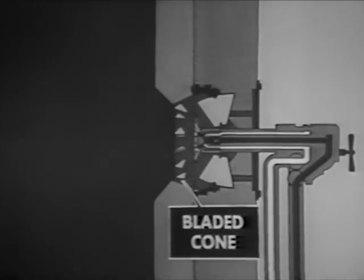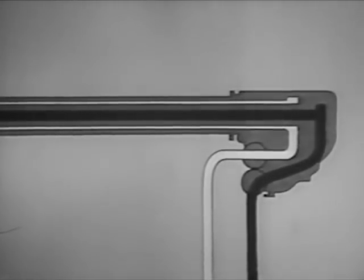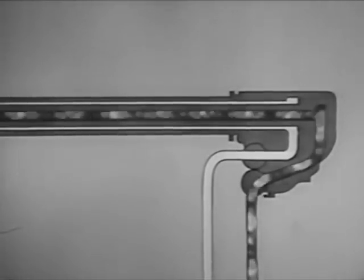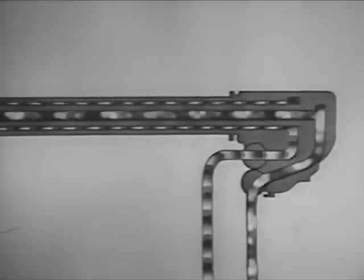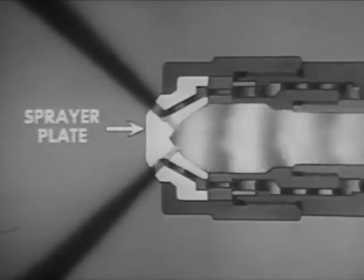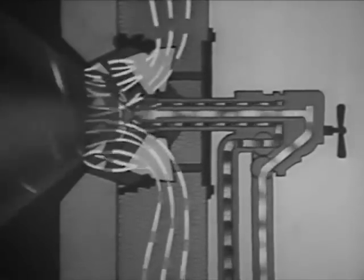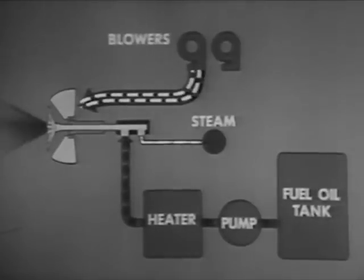The steam atomizing burner is similar in many respects to mechanical atomizing burners. It has an air register with diffuser, bladed cone, and air doors. However, the barrel of the burner has passages for both fuel oil and steam. High pressure steam passes through the central passage in the burner barrel, while oil under low pressure passes along outer passages. The steam heats the oil. The steam and oil mix in the sprayer plate, and the mixture passes through openings or jets in the plate and emerges as a fine mist. Meanwhile, the air from the forced draft blowers is entering the register and mixing with the oil spray.